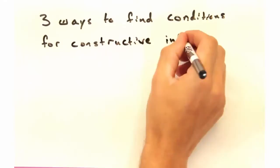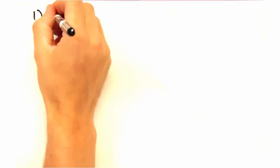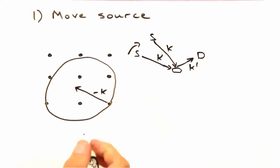Yeah, so there are three ways to find conditions for constructive interference. We can move our source relative to our sample, and that would shift the center of our Ewald Sphere in our reciprocal space.